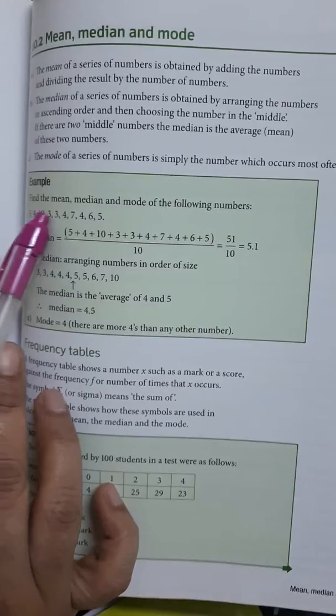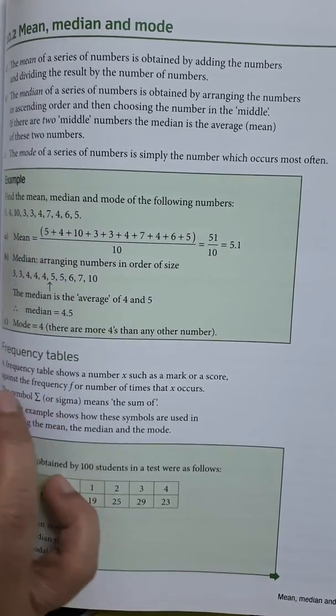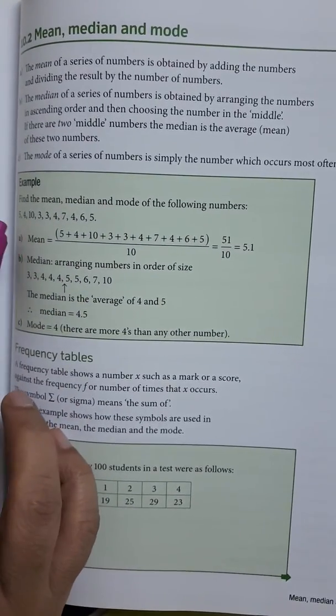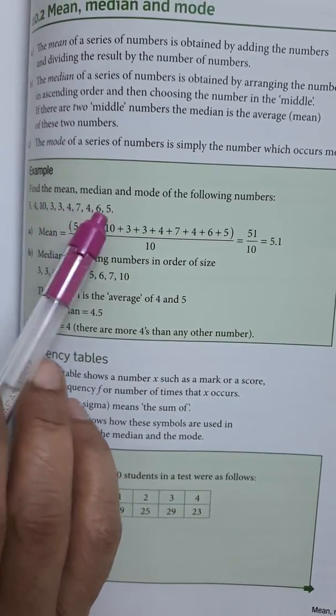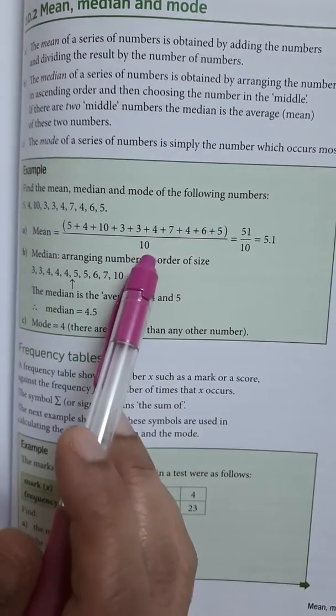Mean is just the addition of all the numbers together divided by the total count. If you count these numbers, they are 1, 2, 3, 4, 5, 6, 7, 8, 9, 10. So the sum divided by 10 will give you the mean.